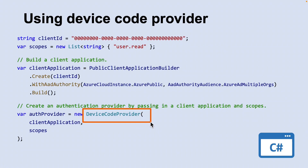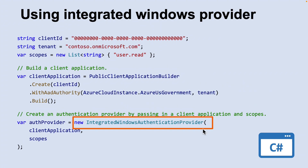The device code flow allows users to sign into a device by using another device. With this provider, you only need to provide a client ID and authority. The integrated Windows flow allows Windows computers to silently acquire an access token when they are domain joined, and also only requires a client ID and authority.